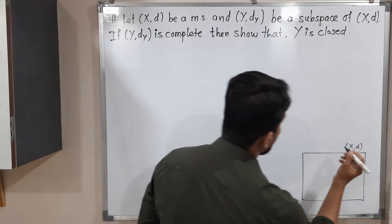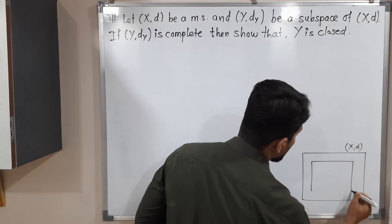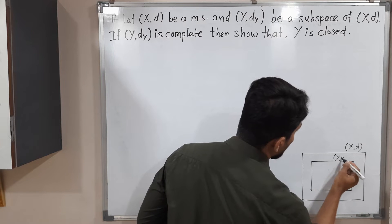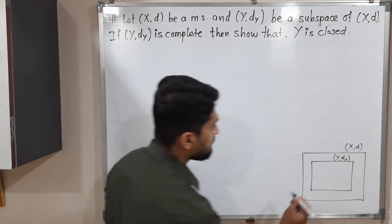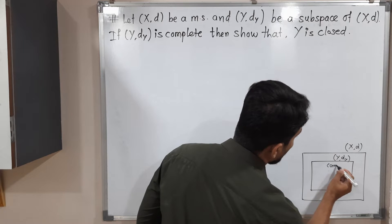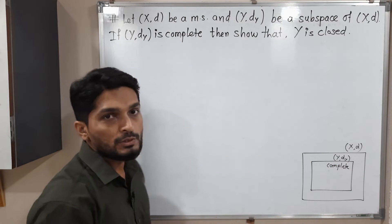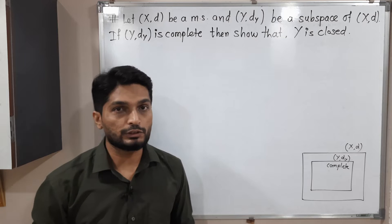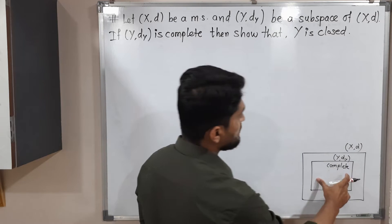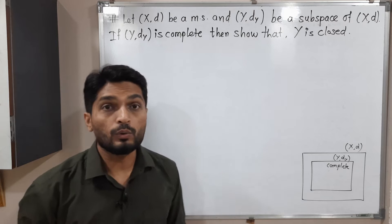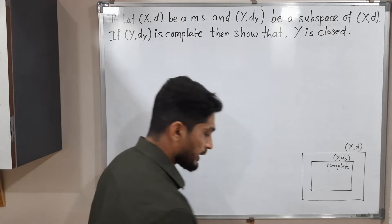This is any arbitrary matrix space. They have given Y,d_Y, which is a subspace of this matrix space X,d. The given information is that Y,d_Y is complete — complete means every Cauchy sequence is convergent. And what we have to prove: we have to prove that the metric space Y,d_Y is closed, that it is a closed set.